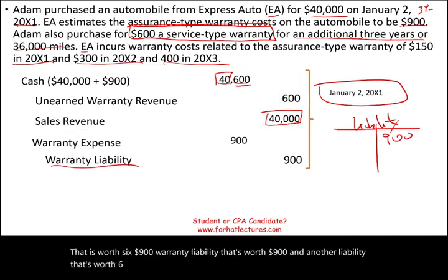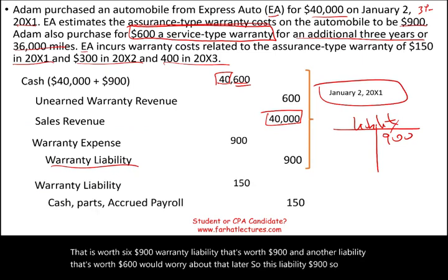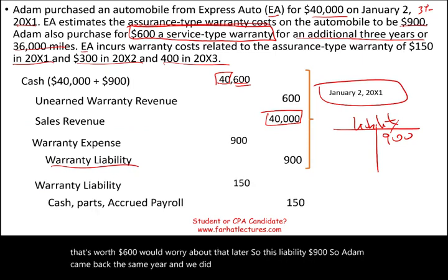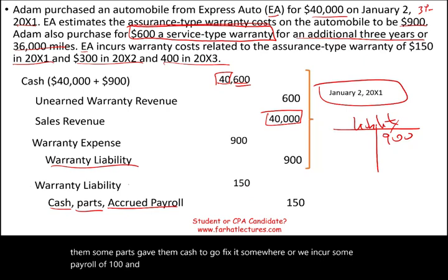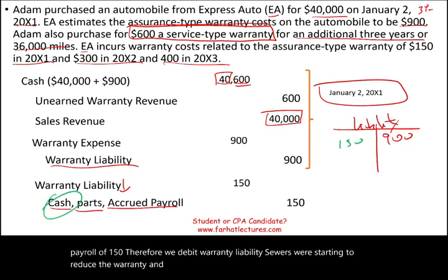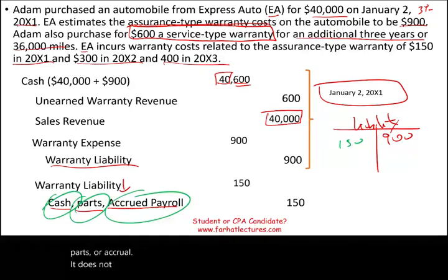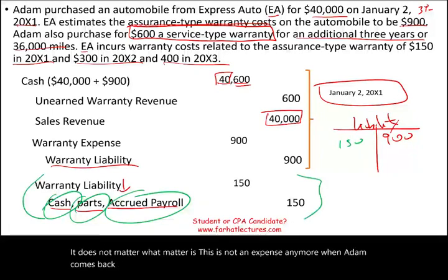Adam came back in year one and we incurred $150 in warranty work — whether cash, parts, or payroll, it does not matter. We debit warranty liability $150 and credit whatever was used, reducing the liability. This is not an expense when Adam comes back in year one; the expense was already recorded at the time of sale.